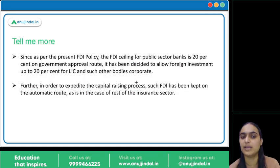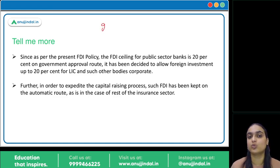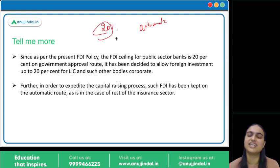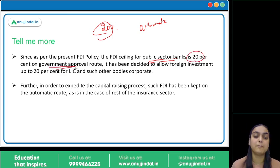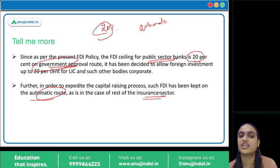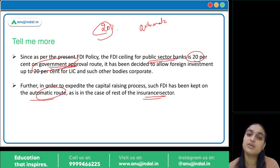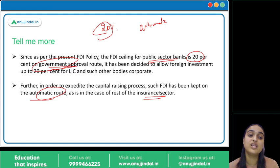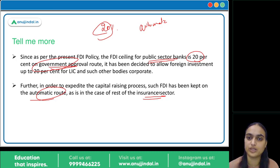The 20 percent limit was set because for public sector banks the present limit is 20 percent, though through government approval route. For LIC, the automatic route has been allowed because it applies to the insurance sector, and it will attract more FDI. If the government route were applied, more restrictions and tedious approval procedures would reduce investment. So the automatic route has been allowed to keep the process easy and attract more foreign investment into LIC.